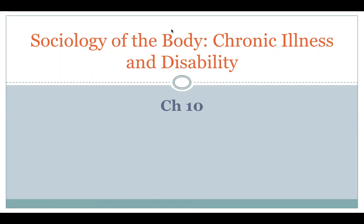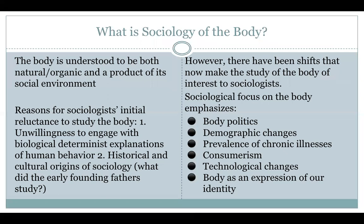This video is for chapter 10, entitled 'Sociology of the Body, Chronic Illness, and Disability.' However, if you've read this chapter, you know that really the chapter is on sociology of the body and several ways in which sociologists approach studying the body, which includes chronic illness and disability but also goes beyond that. The chapter begins by introducing the concept of sociology of the body, because the body is understood to be both natural and organic, and also a product of its social environment.